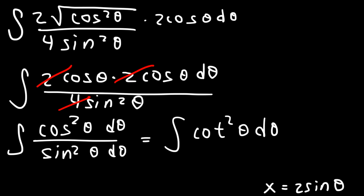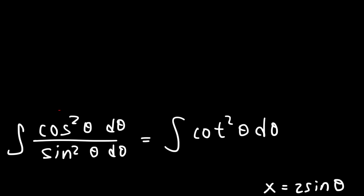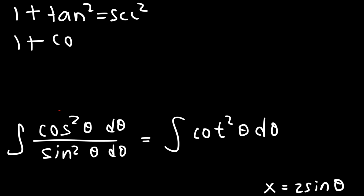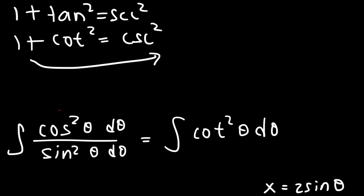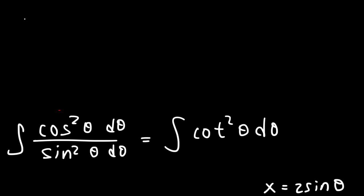Now recall that 1 plus tangent squared is secant squared. So therefore 1 plus cotangent squared is cosecant squared. Moving the 1 to the other side, we can replace cotangent squared with cosecant squared minus 1. So this is what we now have: the integral of cosecant squared theta minus 1, d theta.